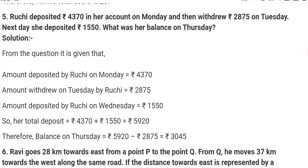Next, question 5. Ruchi deposited Rs. 4370 in her account on Monday. Deposit means in the bank. And then withdrew Rs. 2875 on Tuesday. Next day she deposited Rs. 1550. What was her balance on Thursday? So deposit means in the bank. So amount deposited on Monday, you can see it is 4370. Then on Tuesday 2875, deposited Wednesday. So first of all, total deposit.